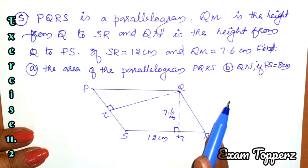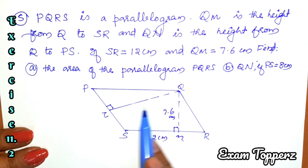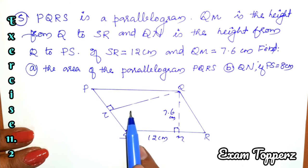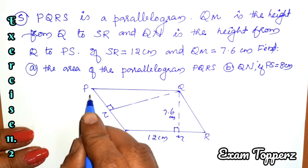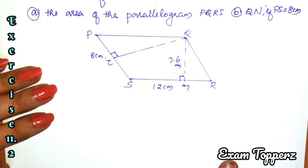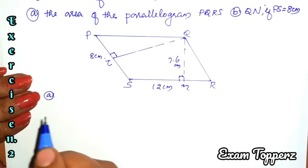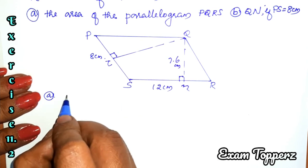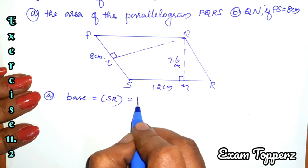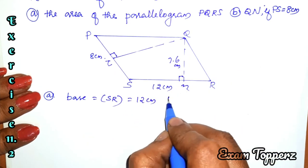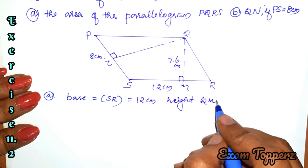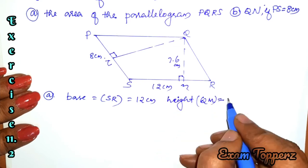The base is SR, which is equal to 12 cm, and the height is QM, which is equal to 7.6 cm.